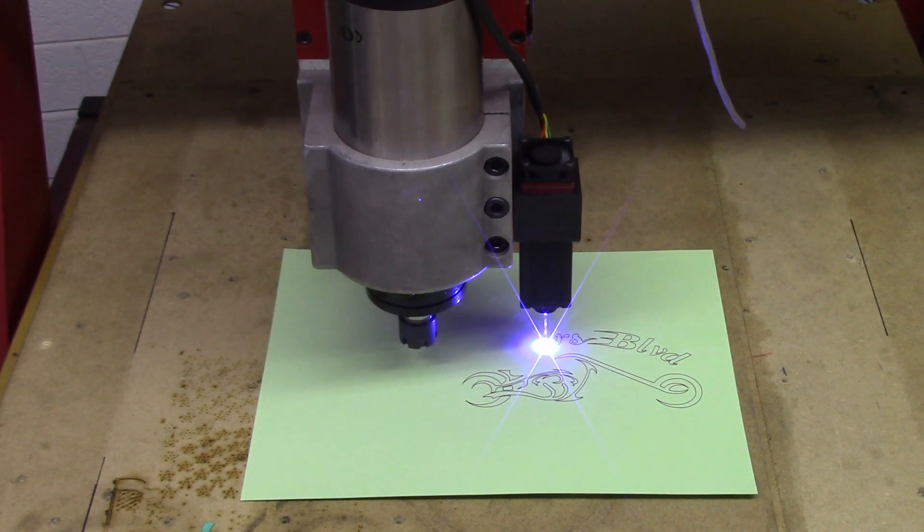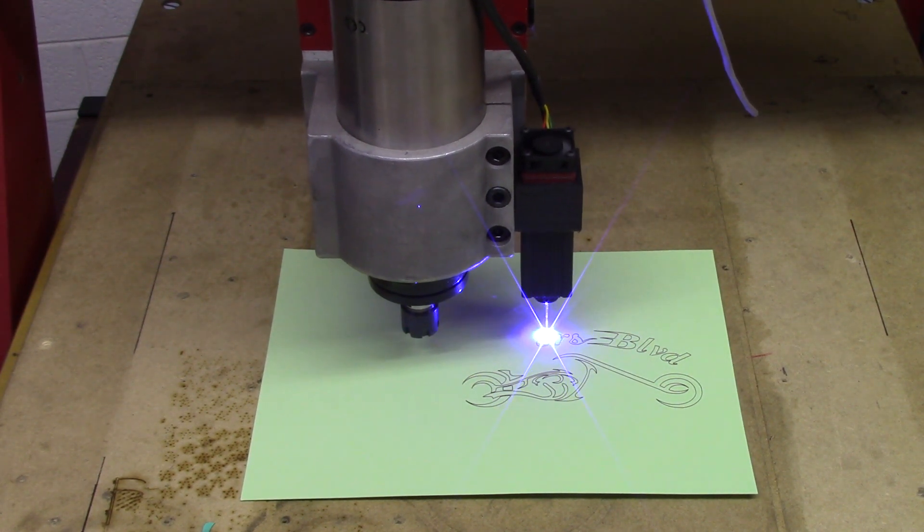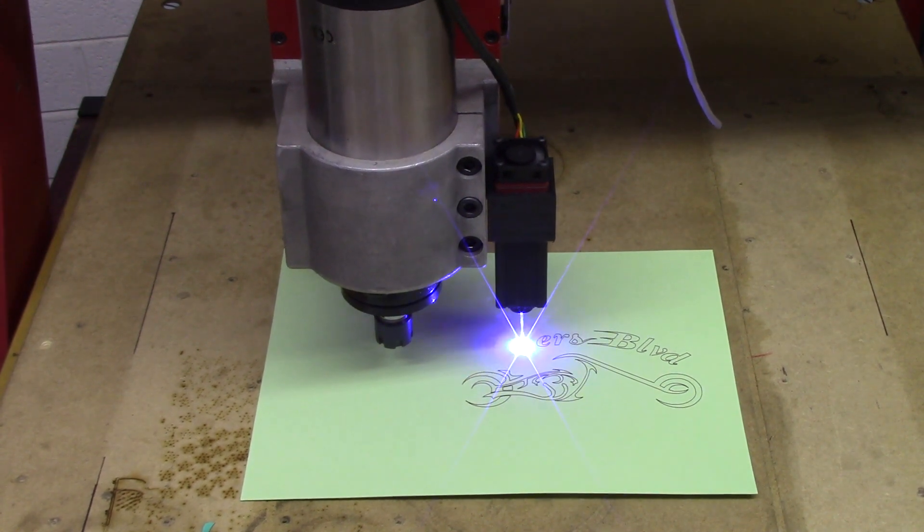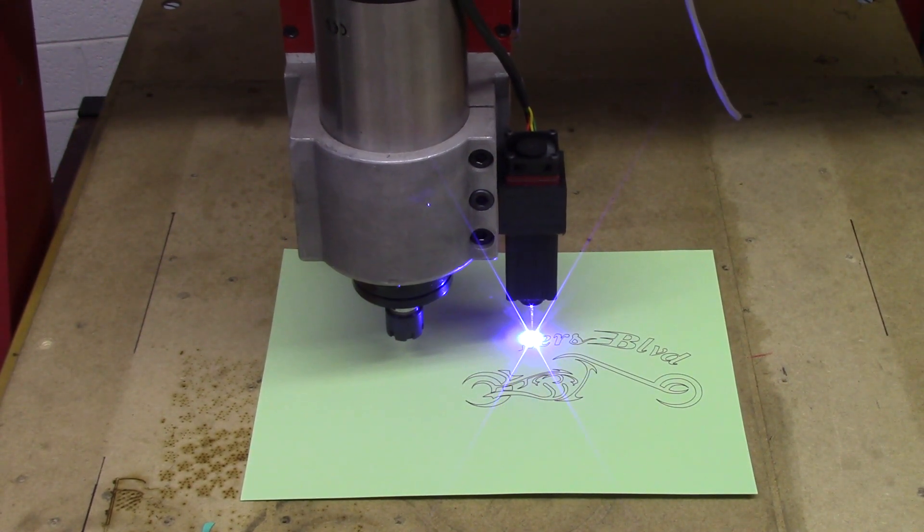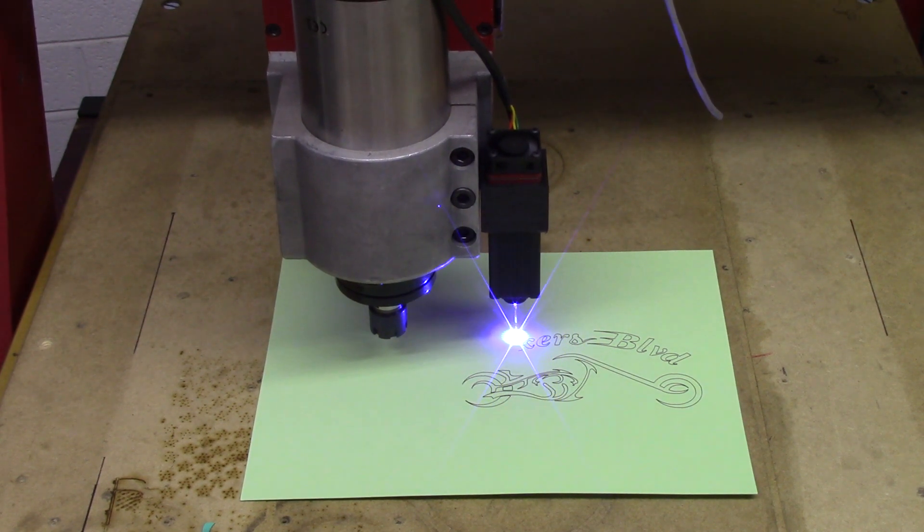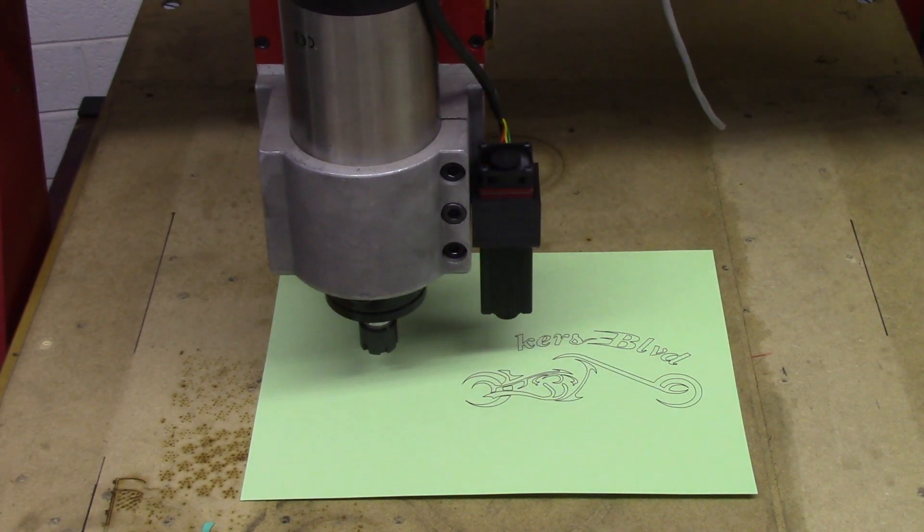Again, this is under Centroid Acorn control. It's a little Phoenix 2 foot by 2 foot router. I retrofitted it some time ago with DMM DYM2 drives and AC servos.